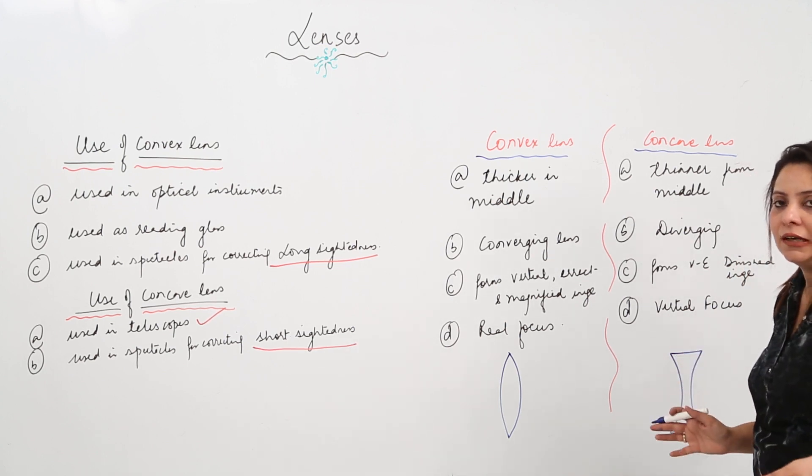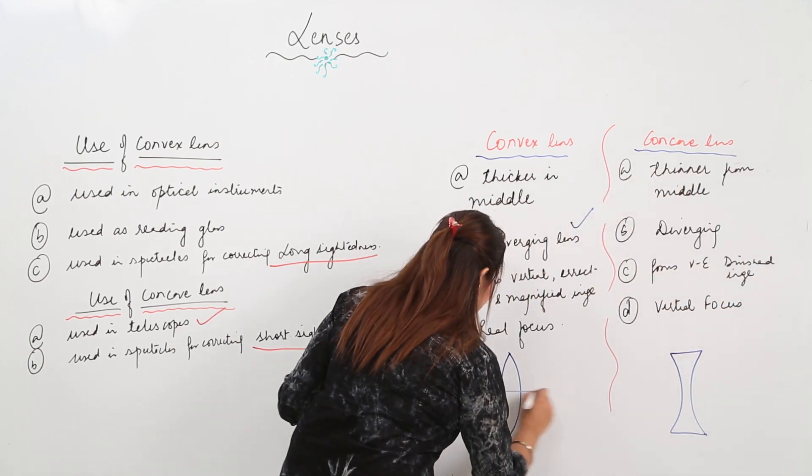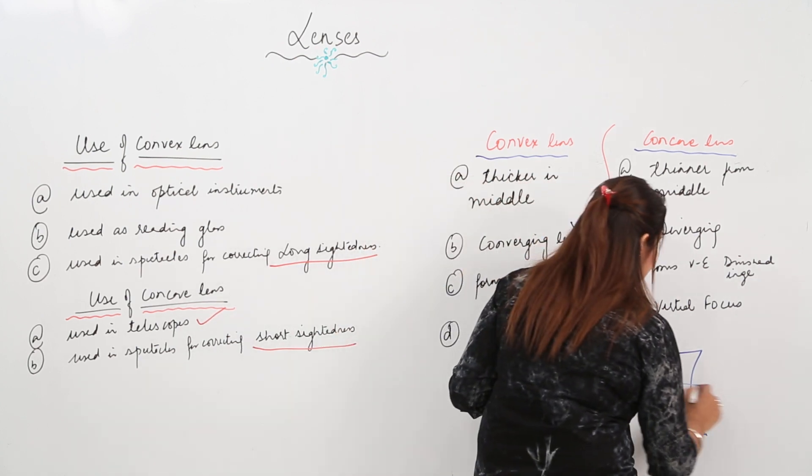It is a converging lens. As we have already discussed, if the rays are falling on it, it makes the rays meet at one point. If the rays are falling on concave lens, it splits the rays in different directions, so it is a diverging lens.